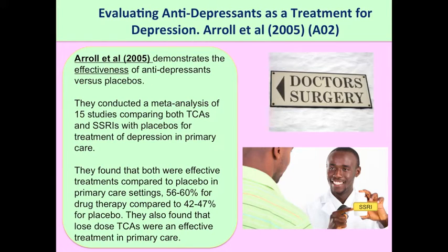We need to evaluate it, and we need double the evaluation to the outline. The first piece of evidence is from Arrol et al., who looked at the effectiveness of antidepressants over placebos — a placebo being a fake drug like a sugar pill with no physiological effect. He conducted a meta-analysis of 15 studies and found that both TCAs and SSRIs were more effective in the treatment of depression in primary care, with 56–60% reacting positively to the drugs versus 42–47% to placebos.